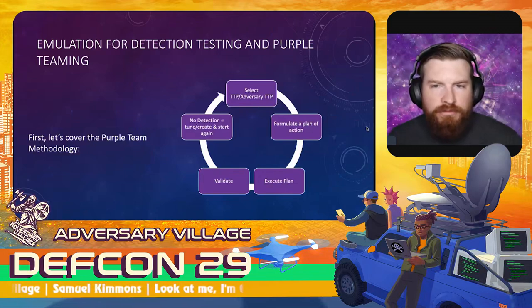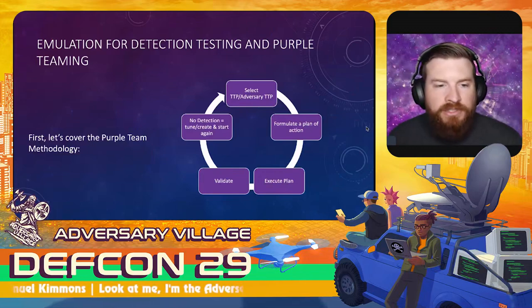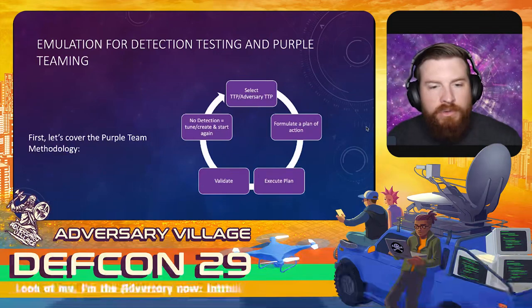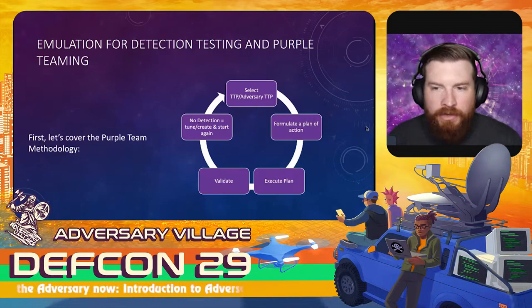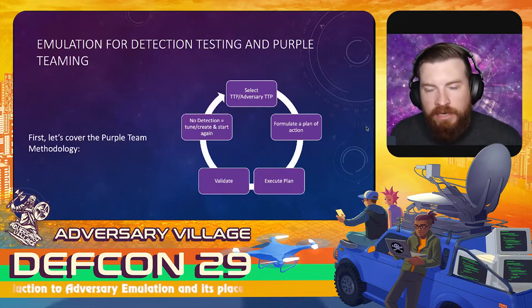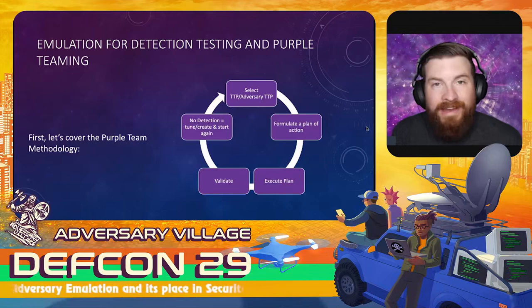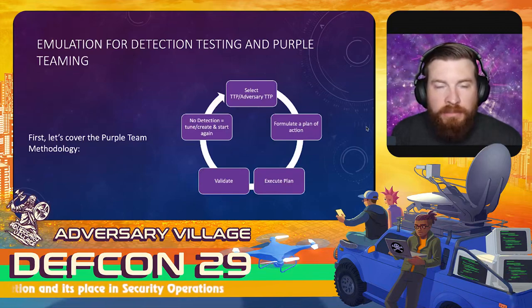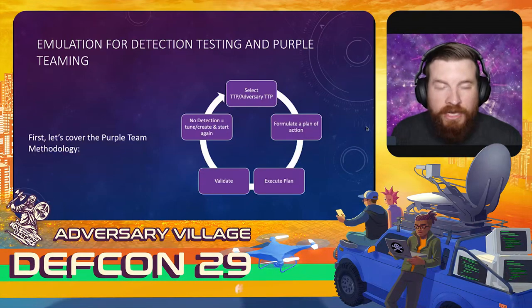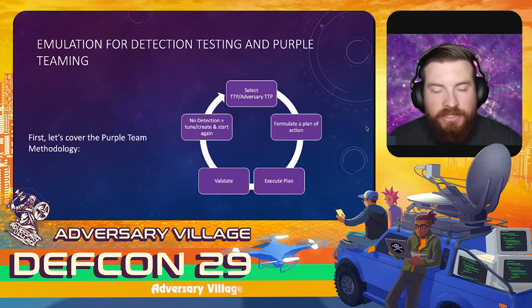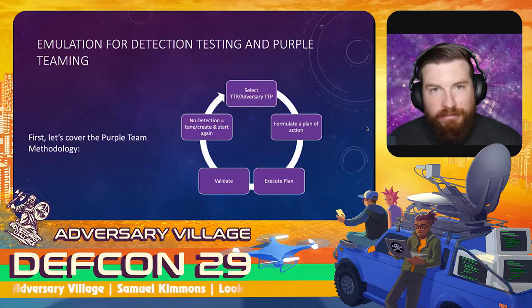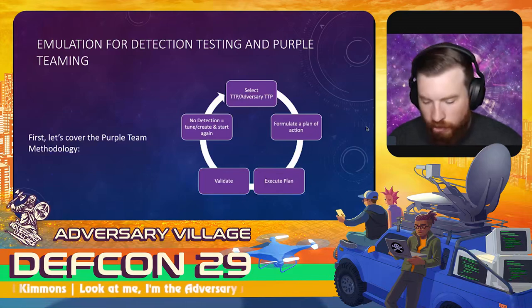Let's talk about emulation for detection testing and purple teaming. My view on the purple team methodology: first, select a TTP or adversary TTP — we can apply both threat emulation and adversary emulation here. Then formulate a plan of action with all parties involved, execute the plan, validate findings, and move to the final step. But it's not truly a final step — it's a continuous process. If there's no detection, you tune or create and start again.